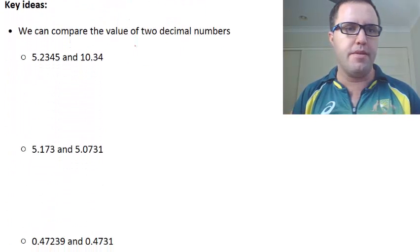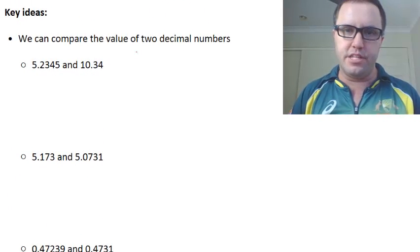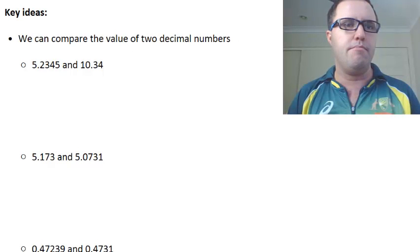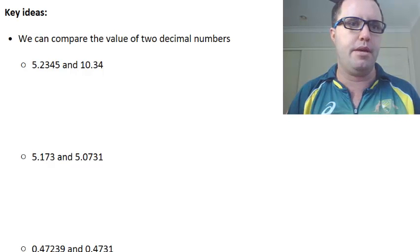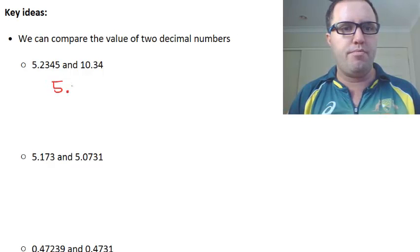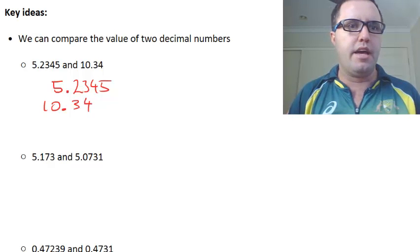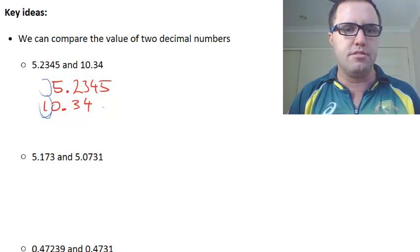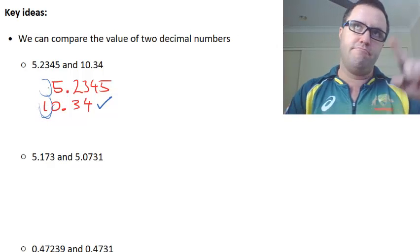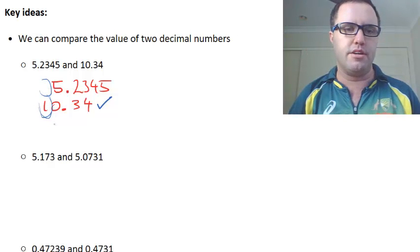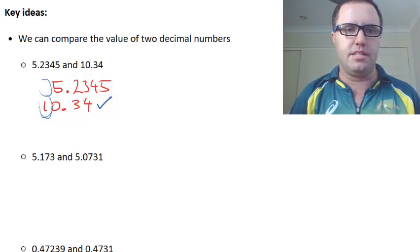A couple of key ideas for us to think about. We can compare the value of two decimal numbers. The main thing we want to think about is the position of the decimal point. So if I put the right, look at these two numbers. Let's forget about the fact that these are pretty easy ones to compare. So 5.173 and the other one is 5.0731. As you can see, this number has a number in the tens column, in the tens place, and this doesn't. So that means that this one here is automatically bigger.